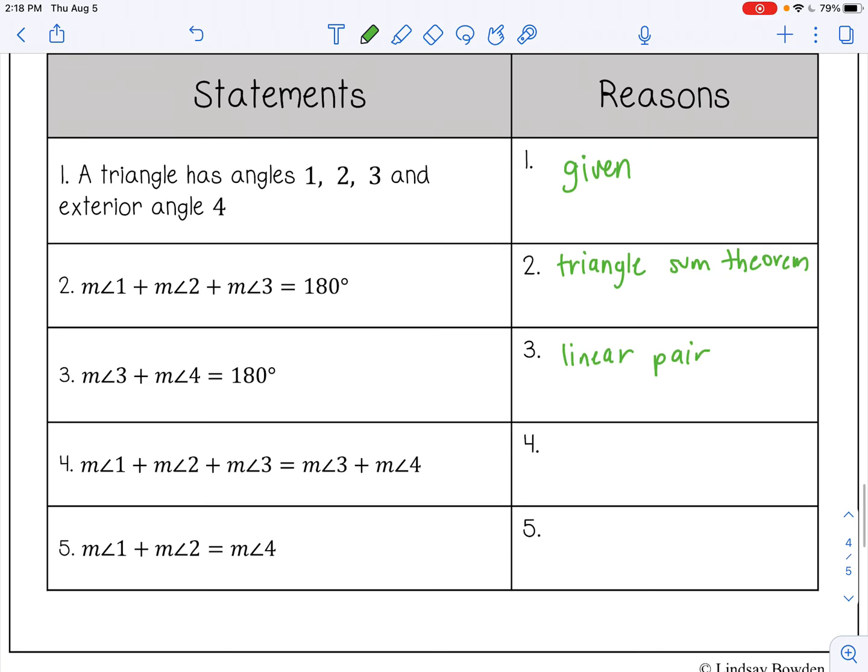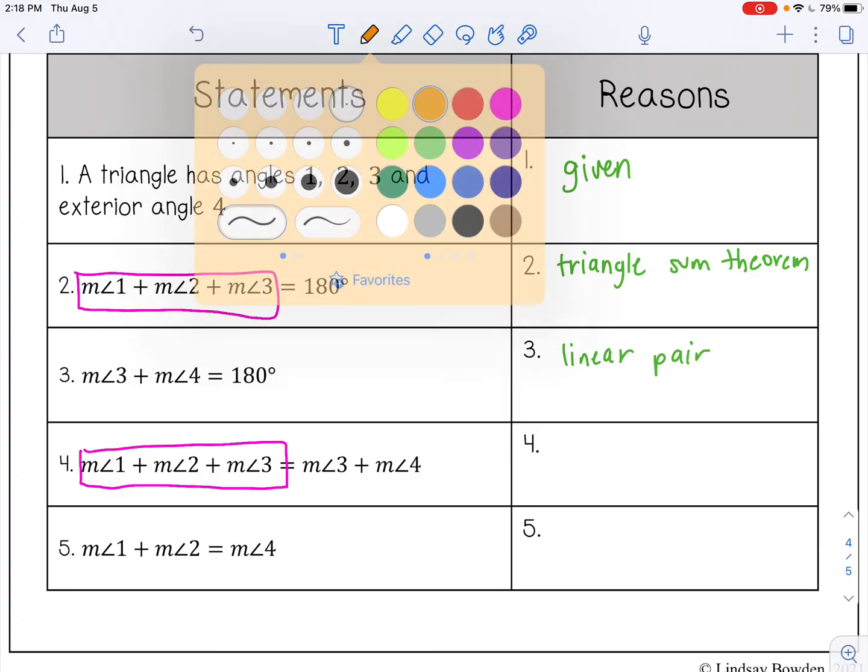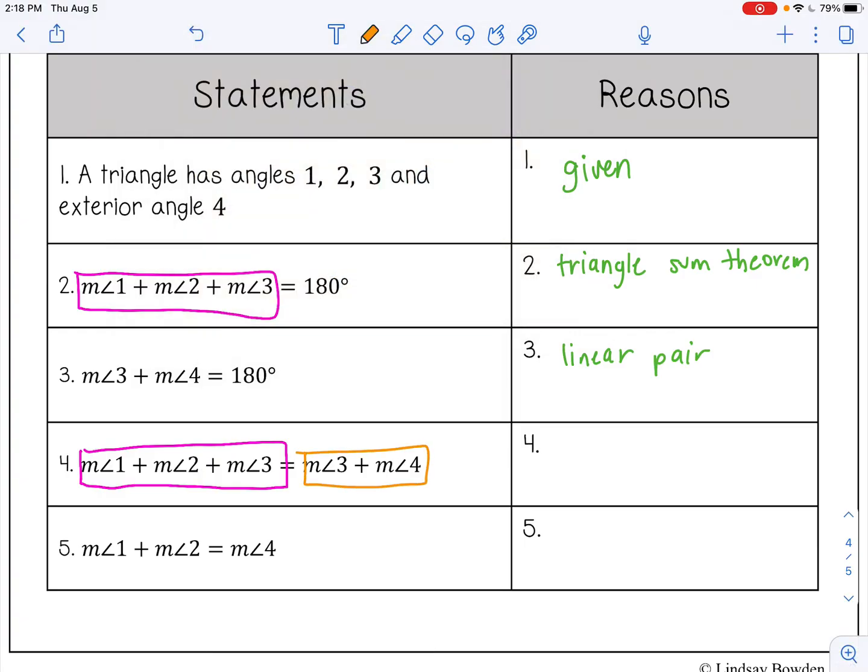And we have this really long statement, but this section came from here. So basically we're saying these two expressions, these two statements are equal. And the reason we can say that is because they're both equal to 180. So if two things are equal to the same thing, we can say they're equal to each other. That's called the transitive property.